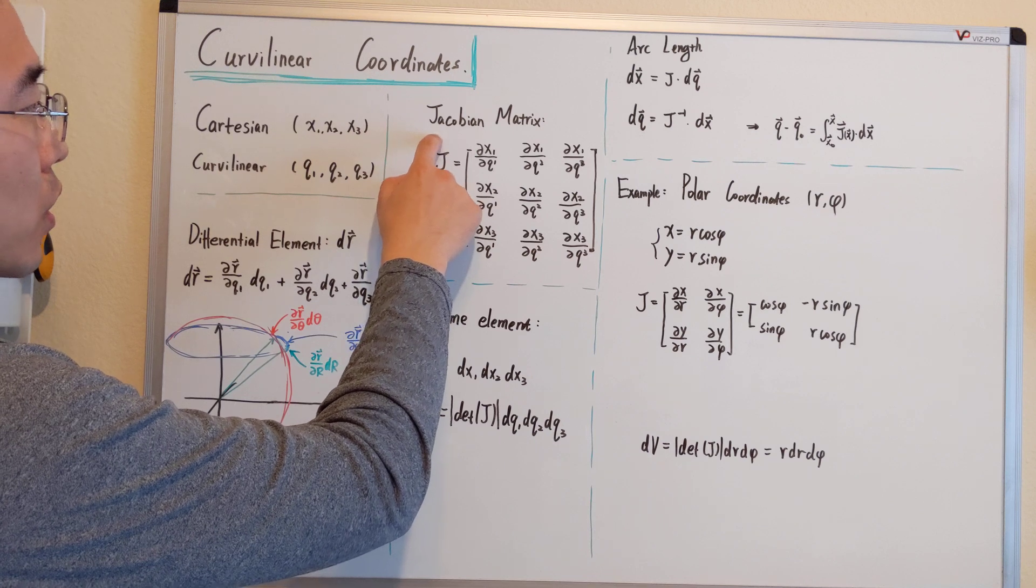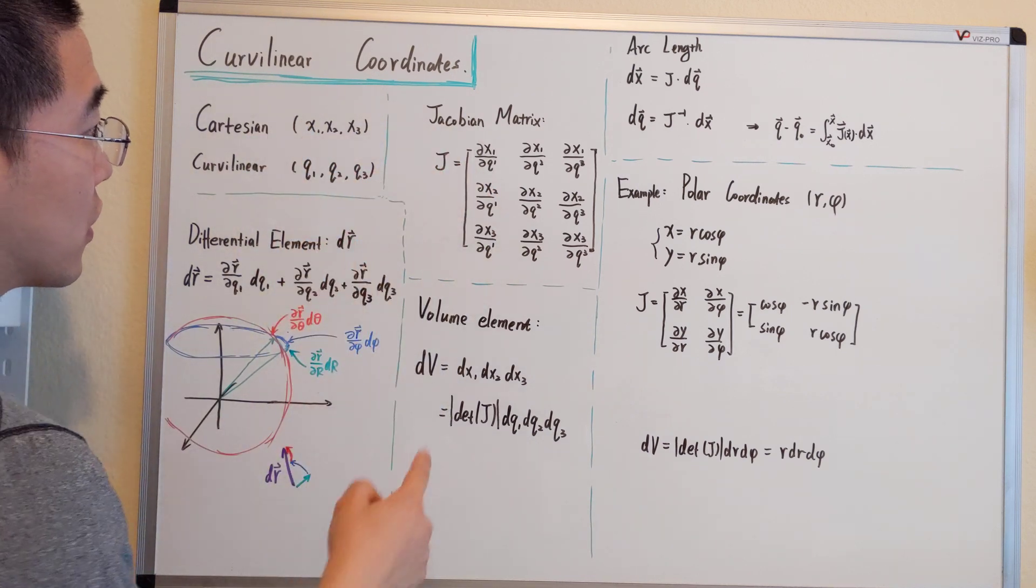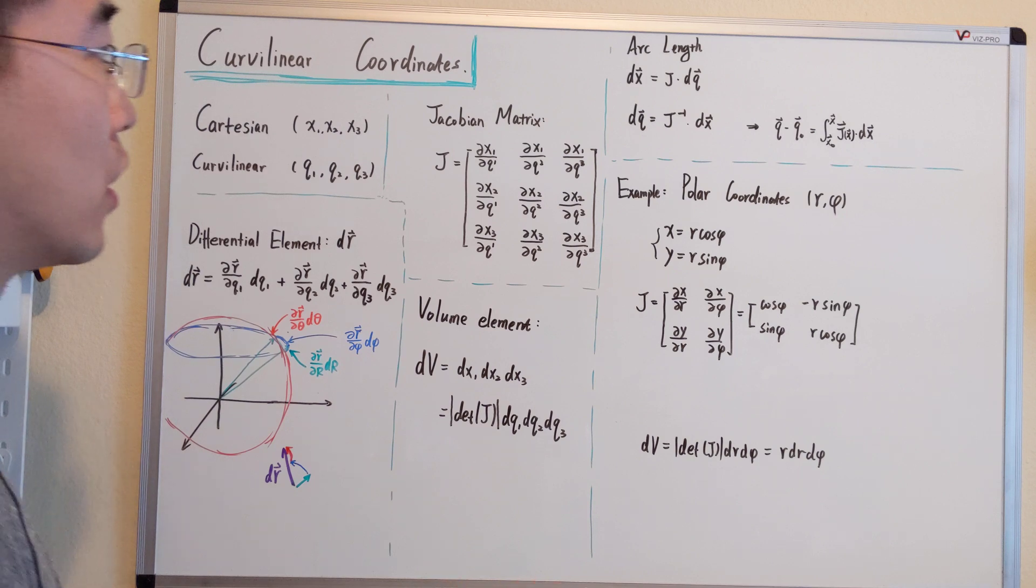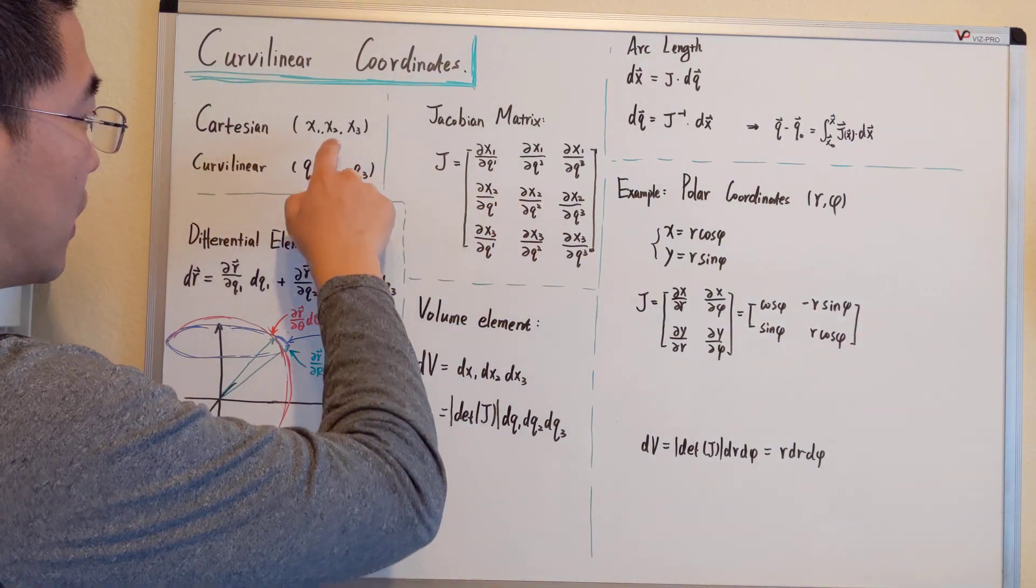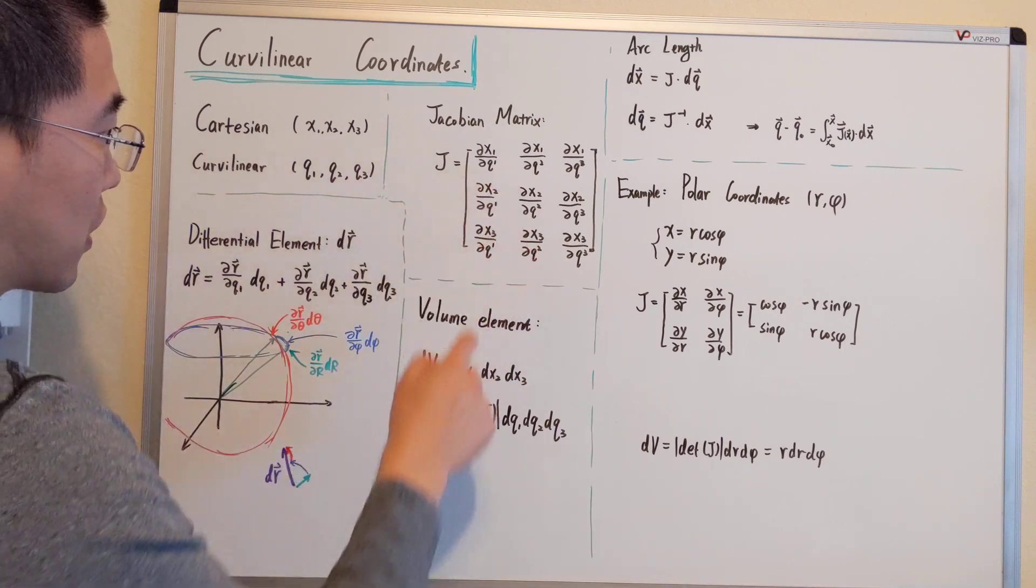The core concept of the curvilinear coordinate is the Jacobian matrix. Basically, the derivative of both coordinates, as you can see.